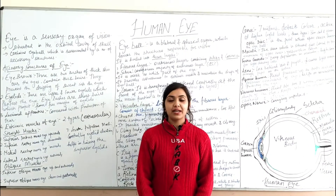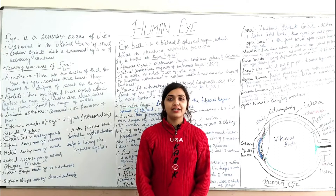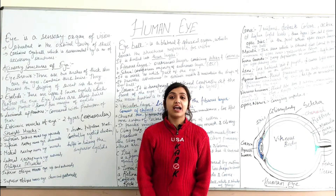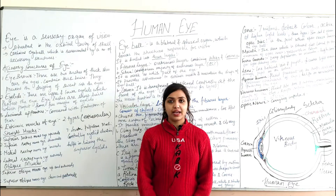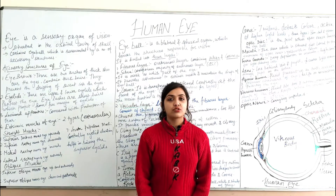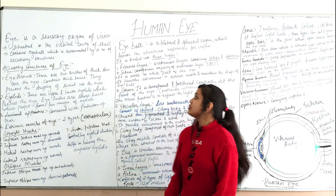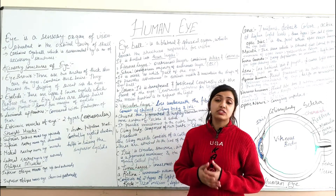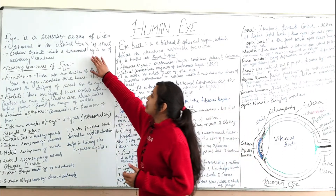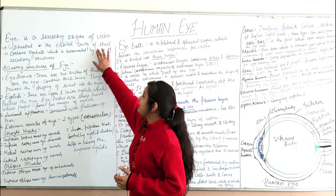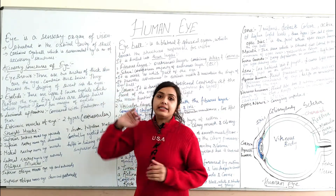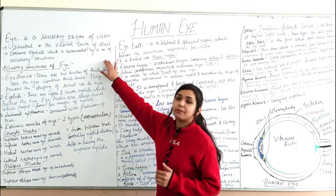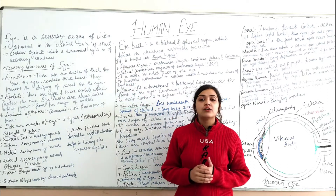Hello everyone, welcome back to our channel. Today we are going to discuss one of the important special senses — the human eye, which is used for vision. The eye is a sensory organ located in the orbital cavity of the skull, containing the eyeball which is surrounded by a number of accessory structures.